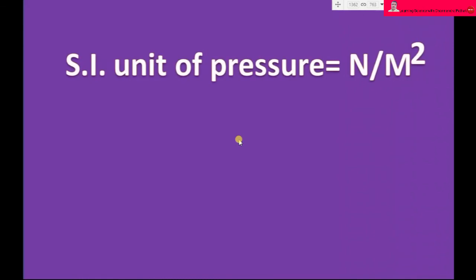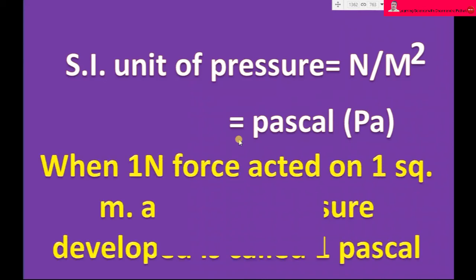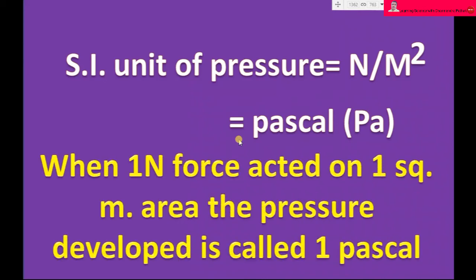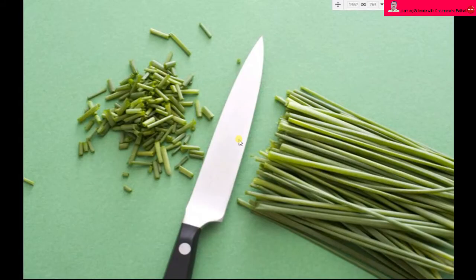The SI unit of pressure is newton per square meter, which is called pascal. When one newton force acts on one square meter area, the pressure developed is called one pascal pressure.